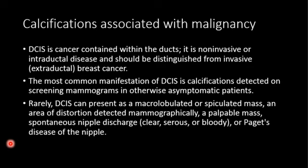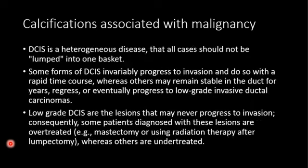Rarely, DCIS can present as a macro-lobulated or speculated mass, area of distortion, palpable mass, spontaneous nipple discharge (serous, clear, or bloody), or Paget's disease of the nipple. All are possible presentations, but most commonly DCIS is asymptomatic. DCIS is a heterogeneous disease — not one kind with one way of progression. All cases should not be grouped into one category — two patients with DCIS may have different prognoses, progressions, and treatment needs.